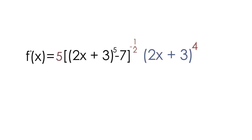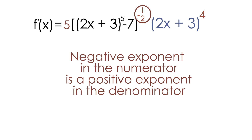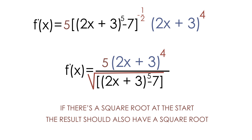The next thing we can do is get rid of the negative exponent — your final answer can never have a negative exponent. Using our properties from algebra, a negative exponent in the numerator becomes a positive exponent in the denominator. So the parentheses with a negative exponent of one-half will be rewritten with a positive one-half exponent in the denominator. Finally, we change the one-half exponent back to a square root, since a one-half exponent and a square root are exactly the same. We do this because we started the problem with a square root, so our final answer should also have a square root.